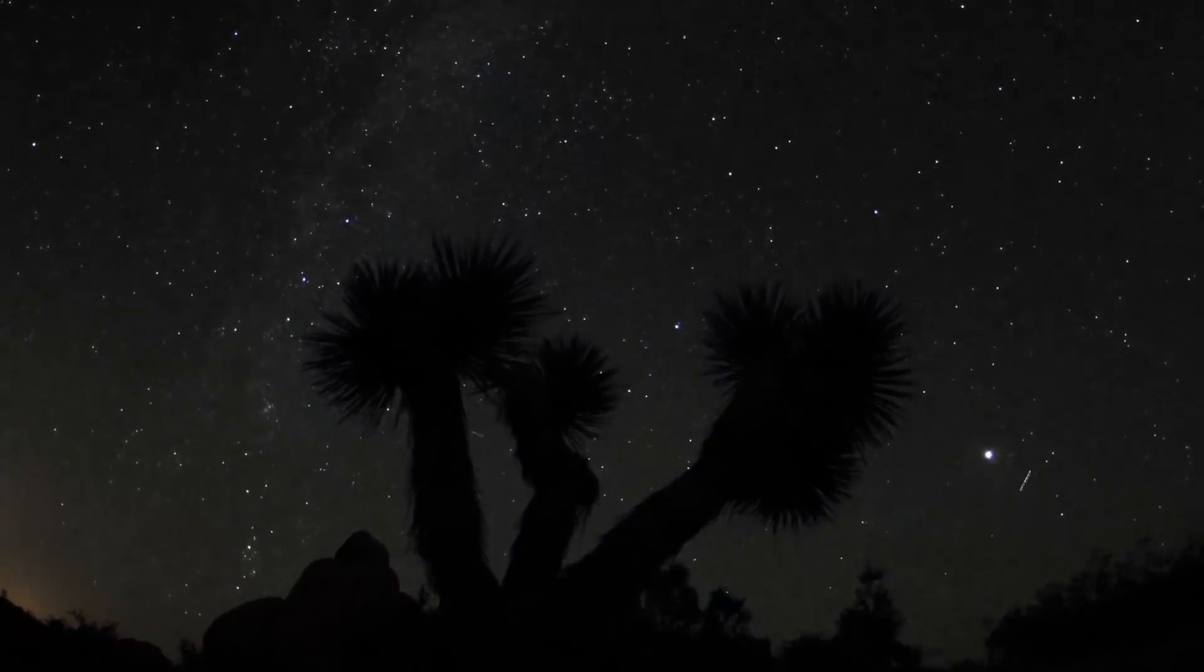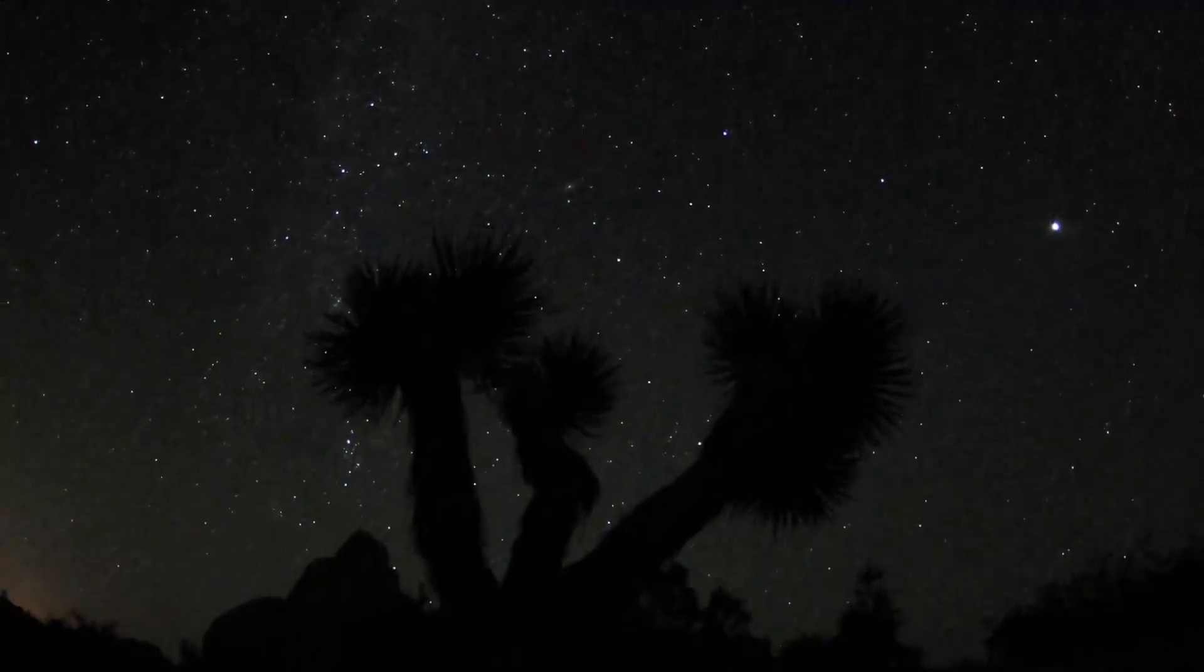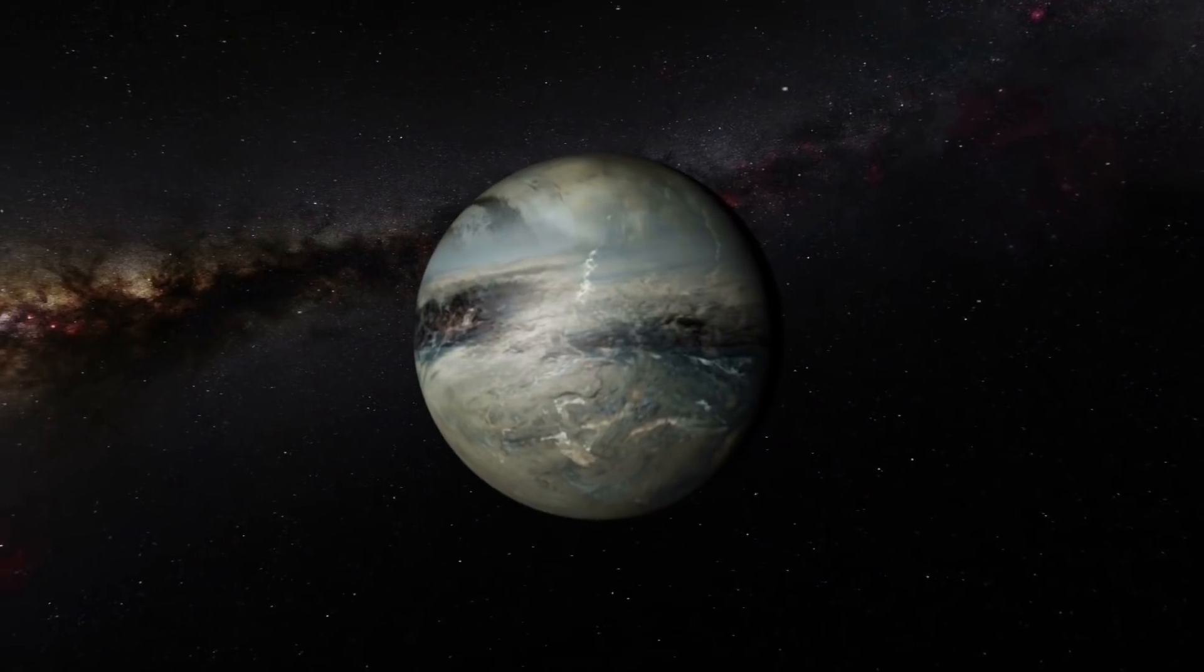So from 2006 on, school curriculum in the United States and elsewhere has taught that the solar system contains just eight planets. But it may actually have been nine all along. It just wasn't ever Pluto.